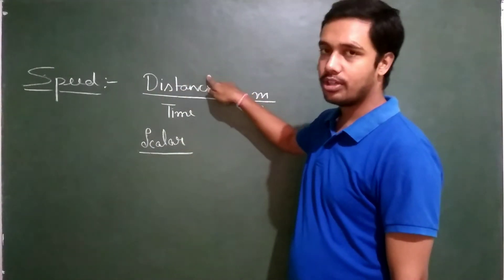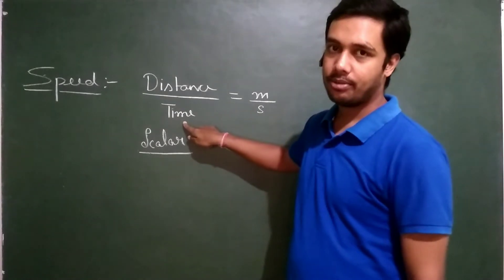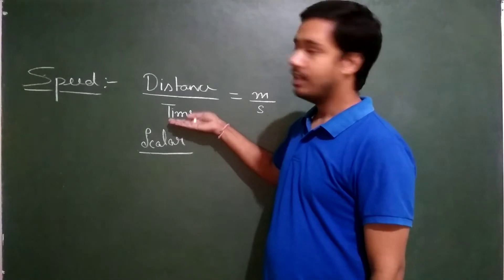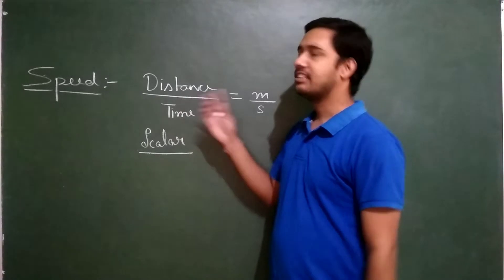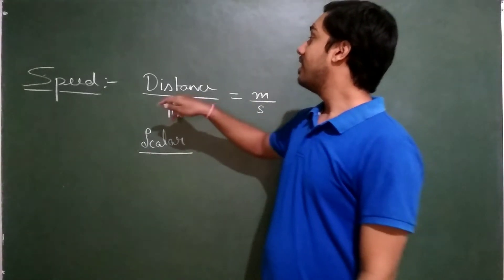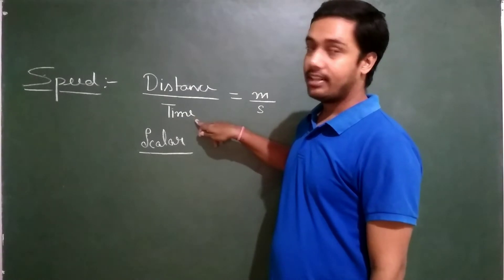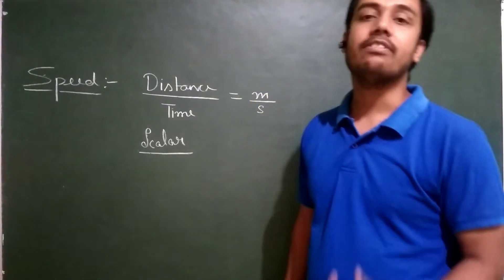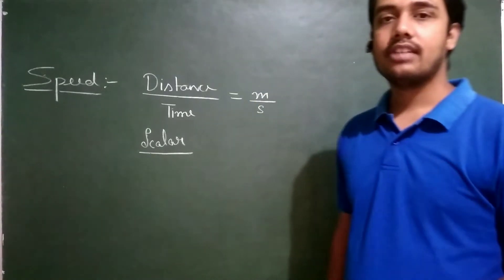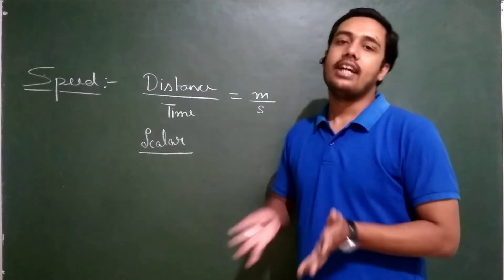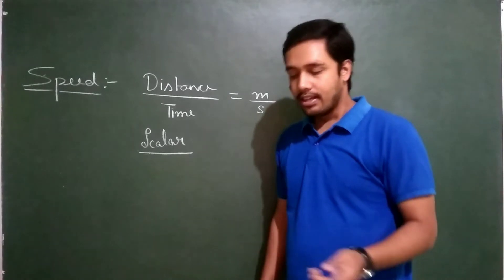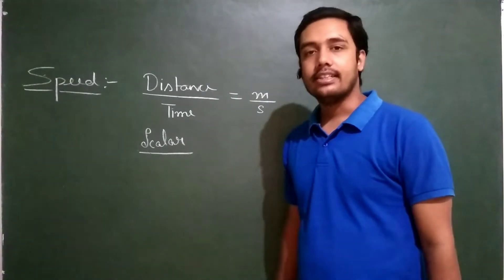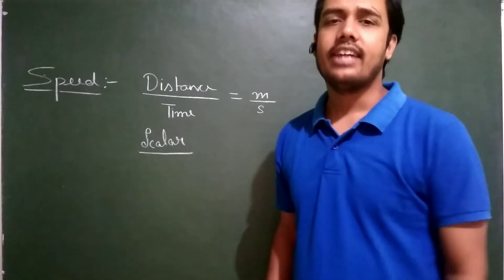Speed is directly proportional to distance and inversely proportional to time. As the distance covered in a given interval of time increases, the speed will increase. Whereas if the time goes on increasing and the distance is not increasing, the speed will decrease. If I am covering a distance very quickly, my speed is very high.